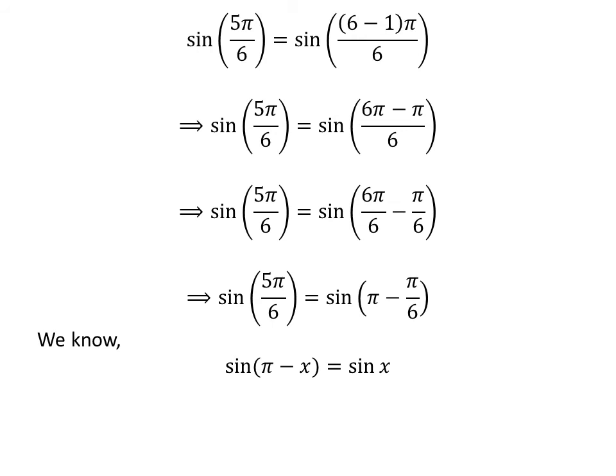We know the famous trigonometry identity: sine of pi minus x is equal to sine of x. The proof of this identity has been explained in the video appearing in the upper right corner, and the link is also given in the description. Applying this identity gives us sine of 5 times pi upon 6 is equal to sine of pi upon 6.